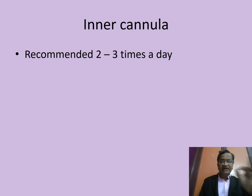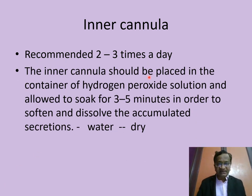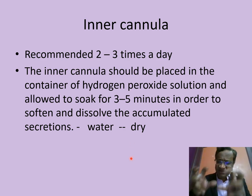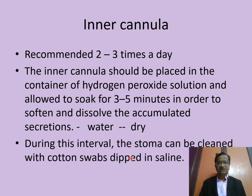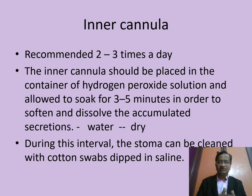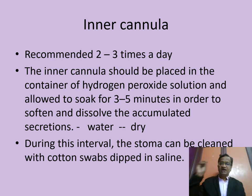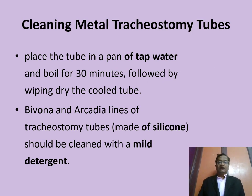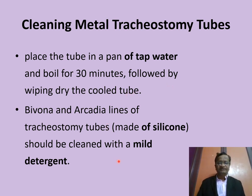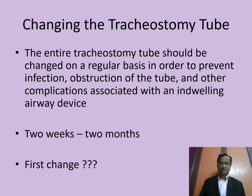Inner cannula cleaning: recommended two to three times a day. Place the inner cannula in hydrogen peroxide, soak for three to five minutes to soften and dissolve thick mucus plugs — that is the advantage of hydrogen peroxide. The stoma can be cleaned with cotton straps dipped in saline. Clean the cannula, wipe it, and reinsert. Do not push hydrogen peroxide inside the tracheostomy. Metal tracheostomy tubes should be placed in a pan of tap water and boiled for 30 minutes.